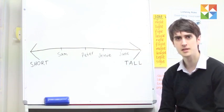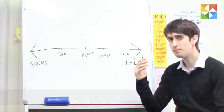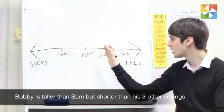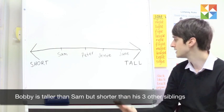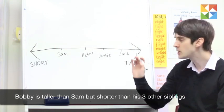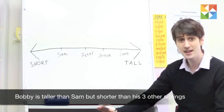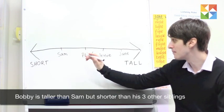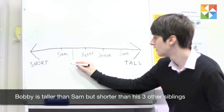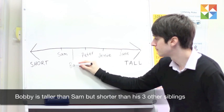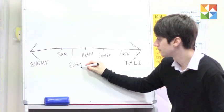The last piece of information we're given is that Bobby is taller than Sam, but shorter than his three other siblings, Peter, Jesse and Jane. So we know that Bobby has to be somewhere between Sam and Peter. Like that.